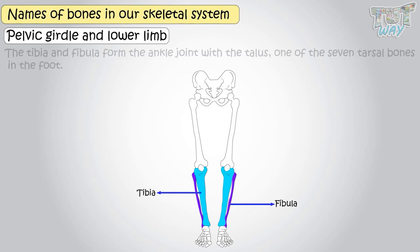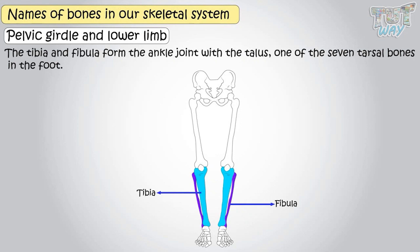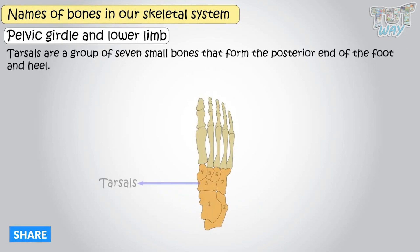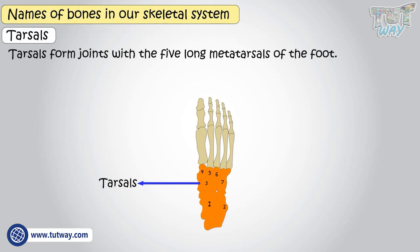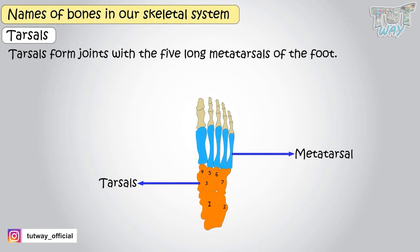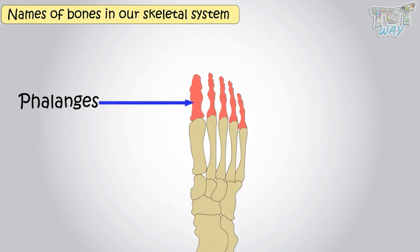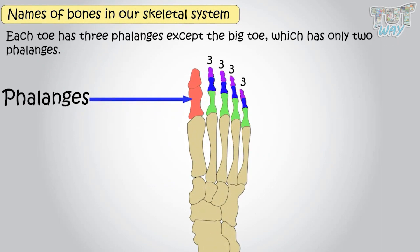The tibia and fibula form the ankle joint with the talus, one of the seven tarsal bones in the foot. Tarsals are a group of seven small bones that form the posterior end of the foot and heel. Tarsals form joints with the five long metatarsals of the foot, and each metatarsal forms a joint with one set of phalanges in the toes. Each toe has three phalanges, except the big toe, which only has two phalanges.